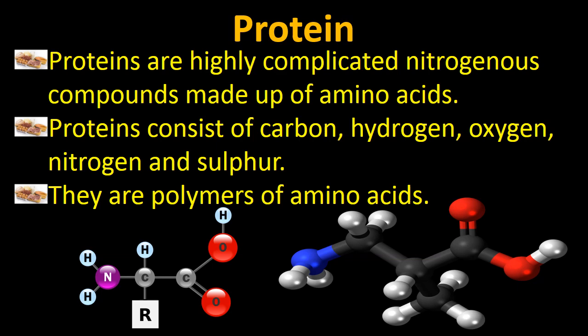So what are proteins? Proteins are highly complicated nitrogenous compounds made up of amino acids. Amino acids are the basic units of protein — just like a building is made up of bricks. The basic unit for making a building is a brick. In the same way, proteins can't be constructed without amino acids. Amino acids join together to give the complicated molecules known as protein.